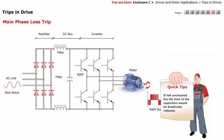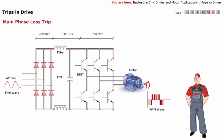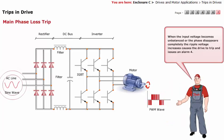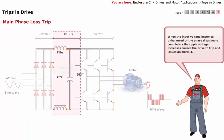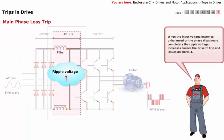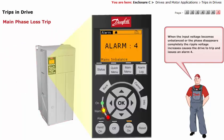If left unchecked, the lifetime of the capacitors would be drastically reduced. The phase loss will only be detected if the load is larger than about 30 to 40% of full output load of the drive. When the input voltage becomes unbalanced or the phase disappears completely, the ripple voltage increases, causing the drive to trip and issue an alarm.